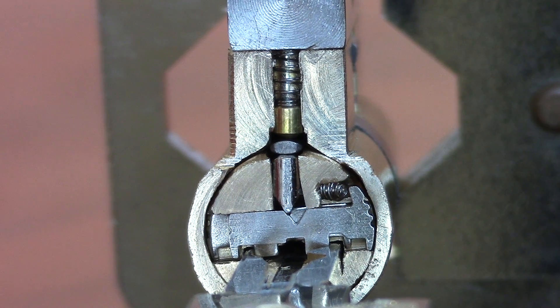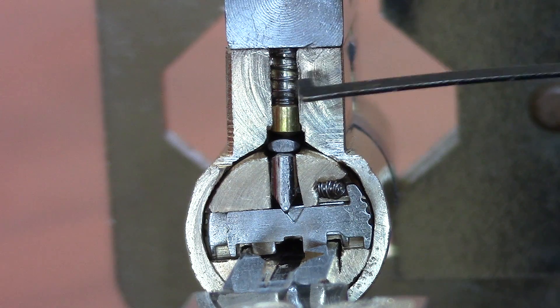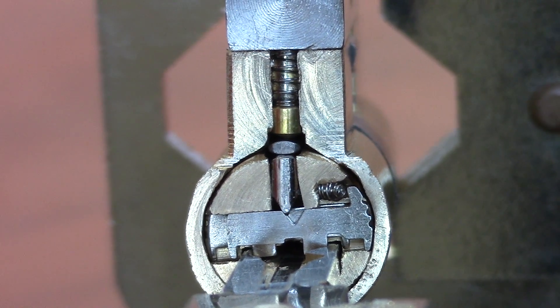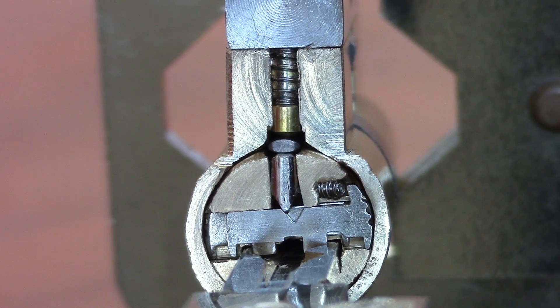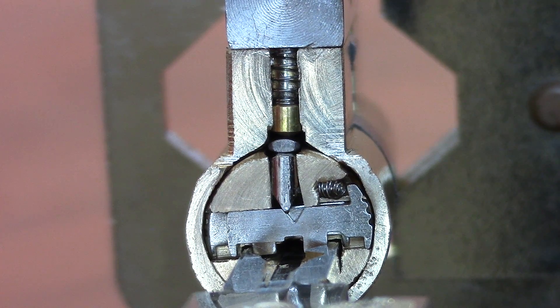Here is a cutaway version of the Yuema lock. Here you can see the spring and the cap that put pressure on the locking mechanism. Here you see the external sidebar and here you see the internal sidebar.